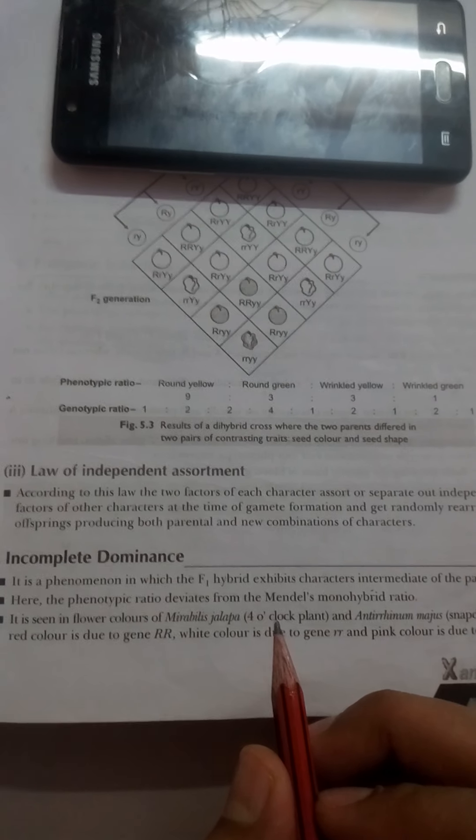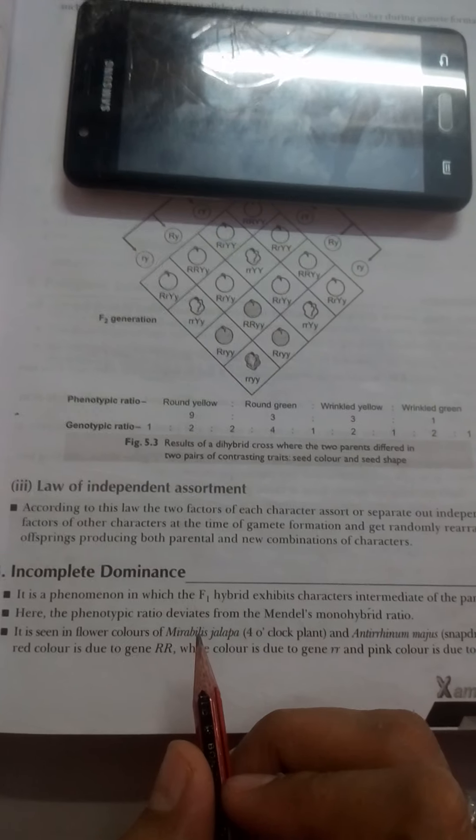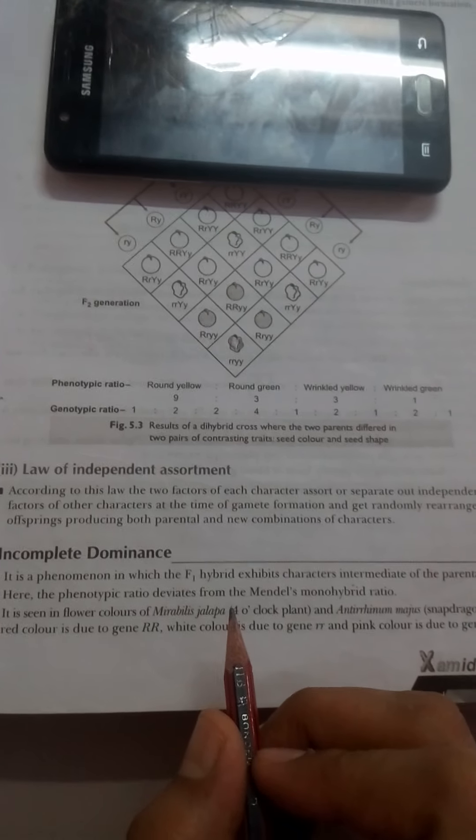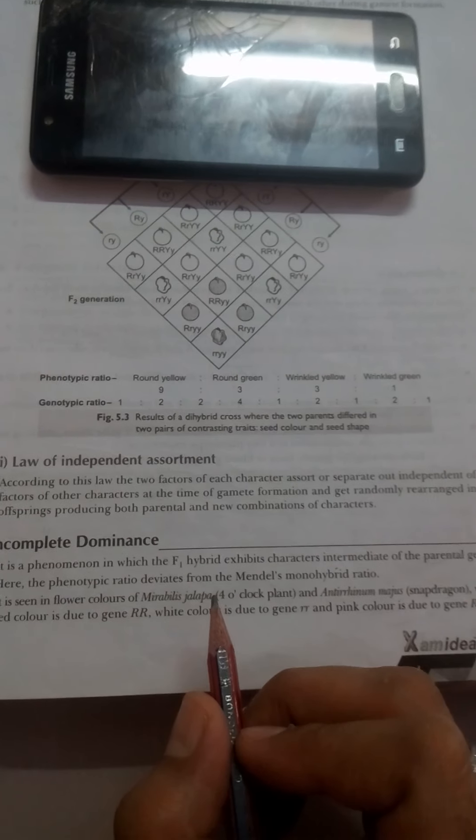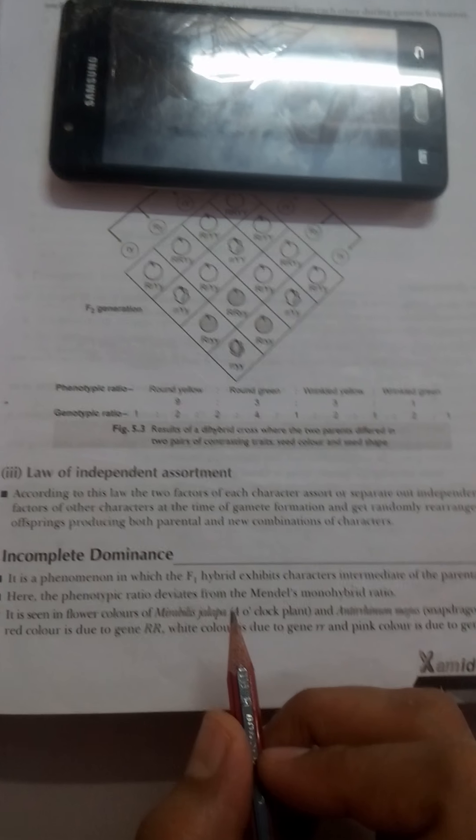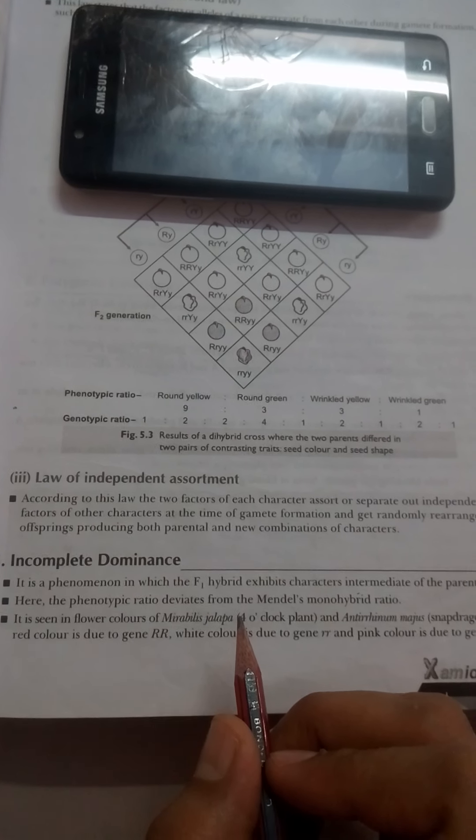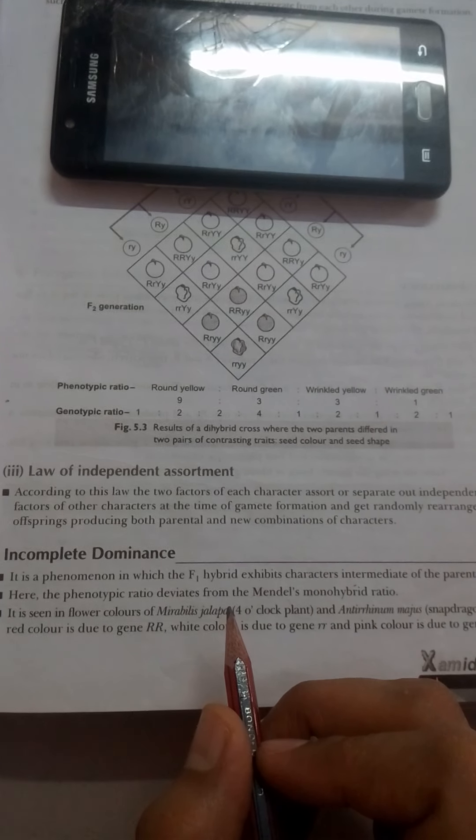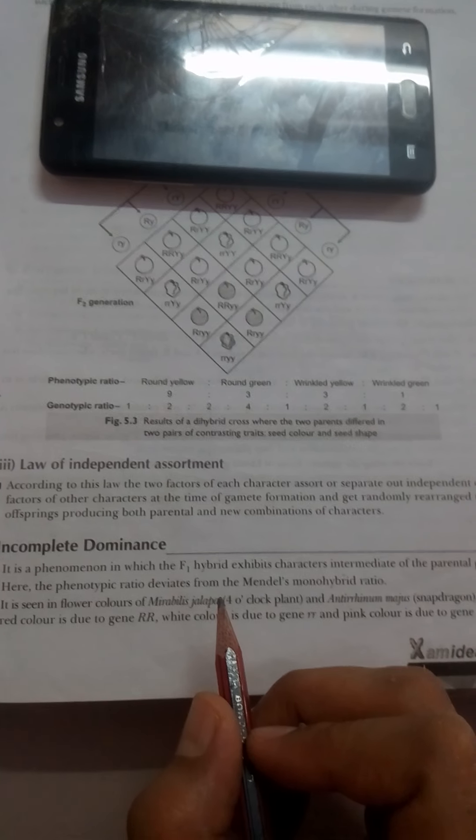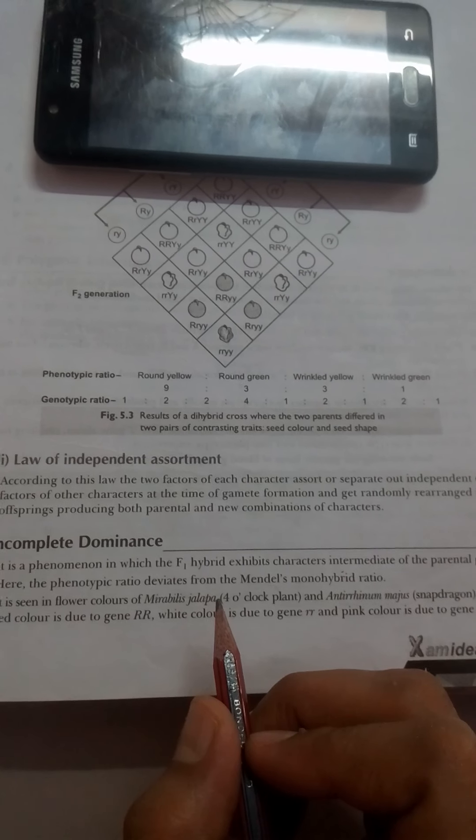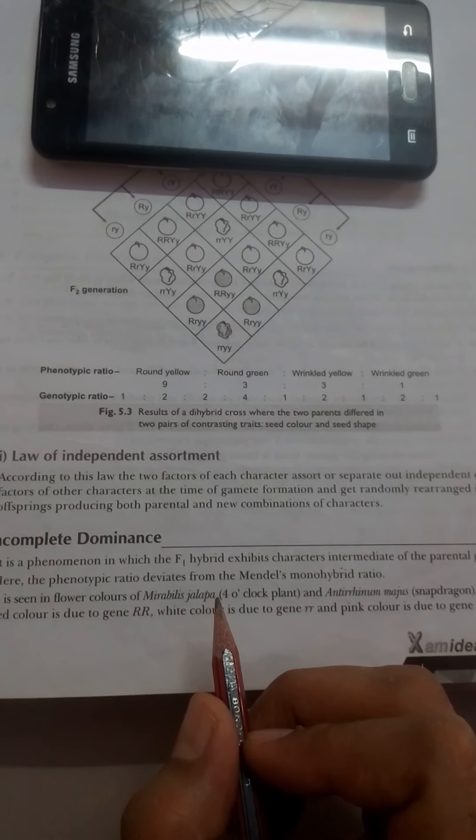He crossed red flowered plants and white flowered plants of snapdragon, Mirabilis jalapa. He found that in the F1 generation, an intermediate colored flower is produced. That is pink, neither red nor white. Pink, intermediate of both the traits.